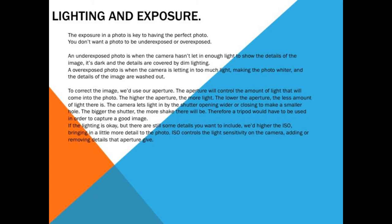Now I will be covering the lighting and exposure part of the presentation. The exposure in a photo is key to having a perfect photo — you don't want it to be underexposed or overexposed. An underexposed photo is when the camera hasn't let in enough light to show the details of an image; it's dark and the detail is covered by dim lighting. An overexposed photo is when a camera is letting in too much light, making the photo whiter and the details of the images are washed out.